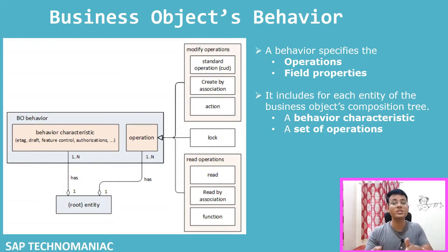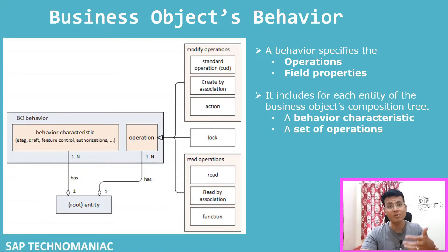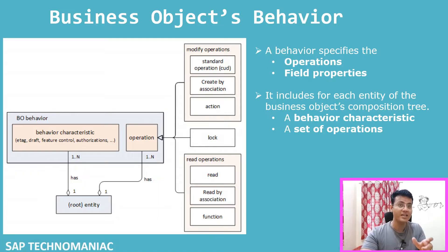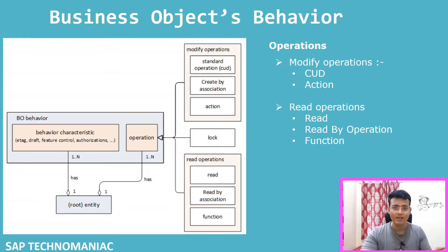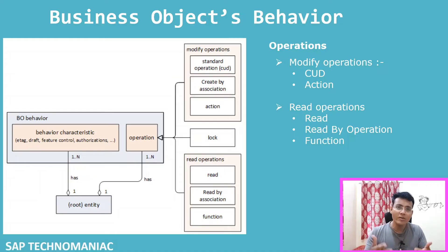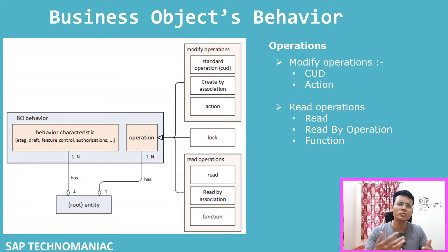For a particular business object, you can also define multiple operations in the behavior definition using BDL. These include standard modify operations: create, update, and delete. Beyond those, we have something called actions. For example, with a sales order business object, apart from create, update, and delete, you might want to approve a sales order or reset it - those additional operations are handled using actions.